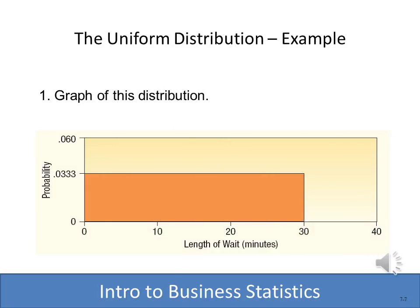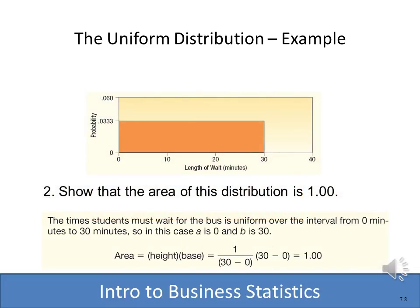We've already seen how this distribution is graphed. The wait time runs between 0 and 30 minutes, so we draw a rectangle with the start point at 0 and the ending point at 30 — A and B. The probability is computed as 1 divided by B minus A. To show the area under the distribution equals 1, the probability of 0.3333 multiplied by 30 gives us 1.